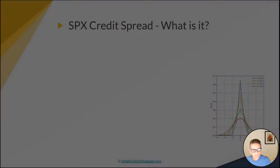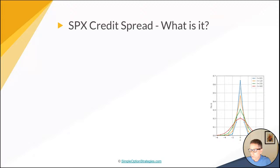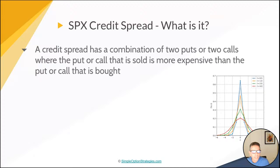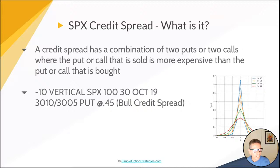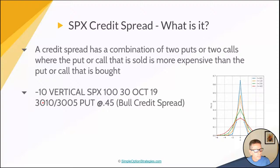Let's start with the real basics — some people might not really understand what a credit spread is. A credit spread is a combination of two puts and two calls where the put or call that is sold is more expensive than the put or call that is bought. You're receiving a credit for that trade. It's called a vertical spread. In this case, the 3010 strike is more expensive than the 35 strike — you're selling the 3010 and buying the 35, which makes it a vertical spread.